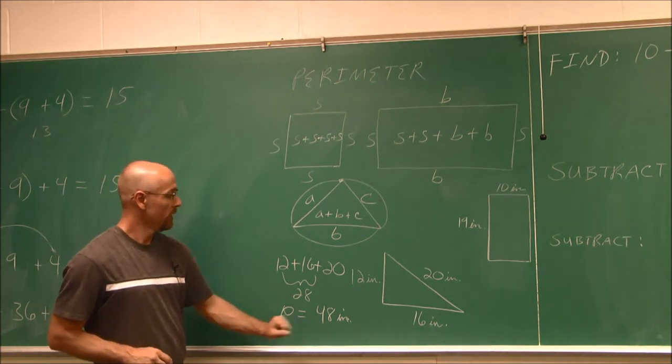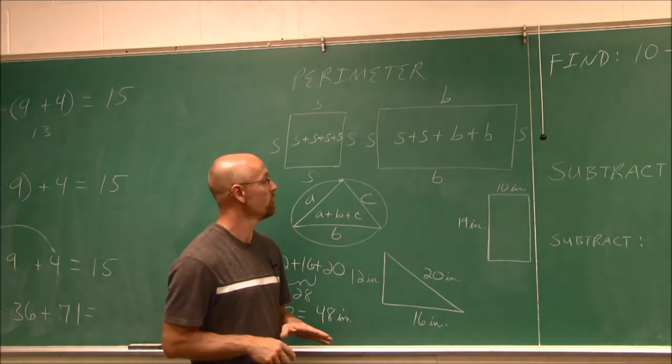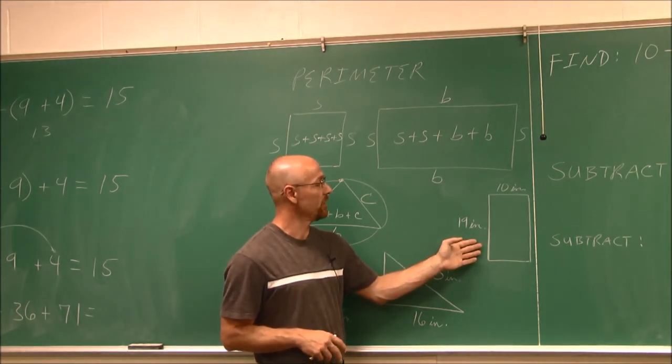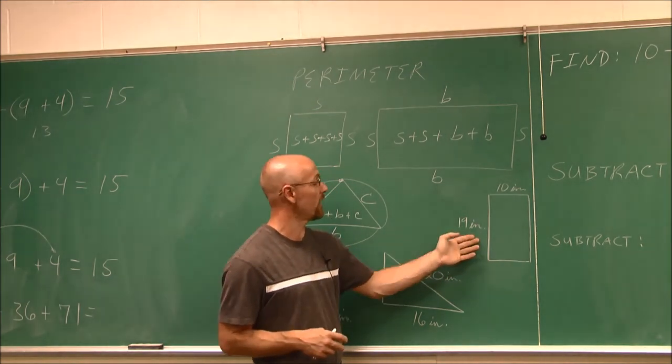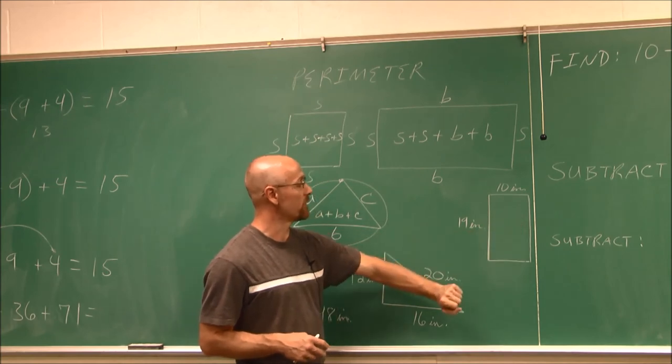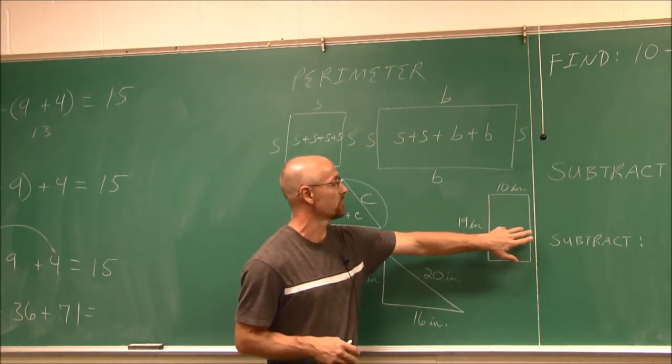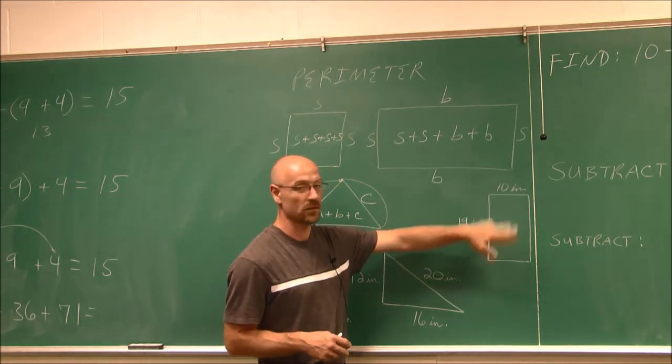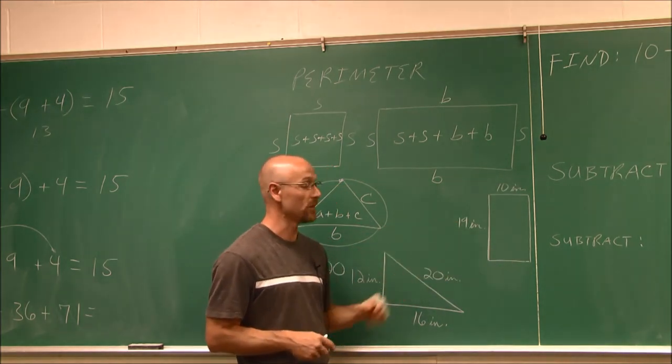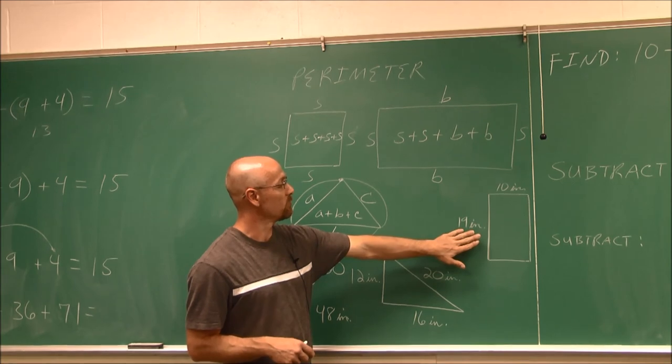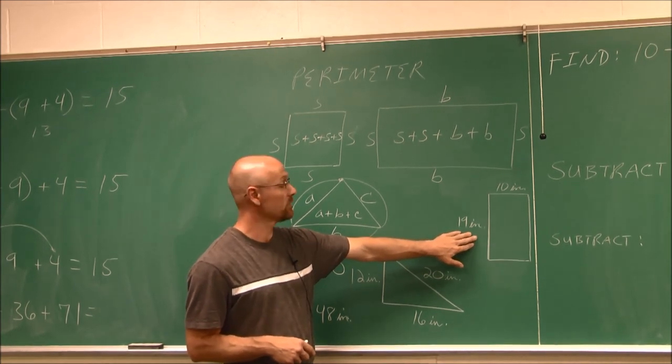Now, again, here's your opportunity to pause the video. And notice what we have here is an example for you to try. Find the perimeter of this rectangle. And remember, when it comes to a rectangle, two sides are the same. The other two sides are the same. Not all four sides are the same. So go ahead and practice this and tell me what you get for the perimeter.